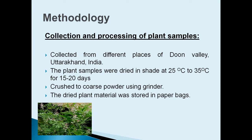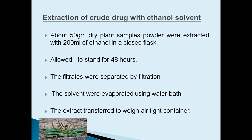Methodology used in this study: the plants were collected from different places of Doon Valley. They were dried in shade at room temperature for 15 to 20 days. The dried plants were crushed to coarse powder using a grinder and stored in paper bags for further use. For extraction of crude drugs, ethanol was used as solvent. About 50 grams of dry plant sample powder were extracted with 200 ml of ethanol in a closed flask, allowed to stand for 48 hours. The filtrates were separated by filtration, the solvent was evaporated using a water bath, and the extract was transferred to an airtight container for further analysis.